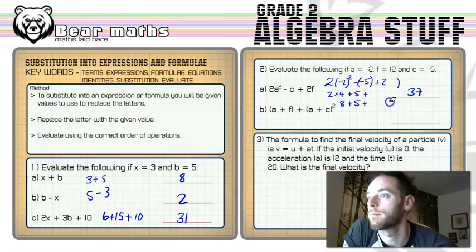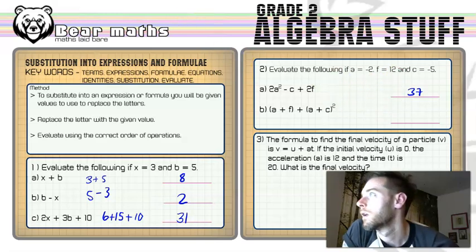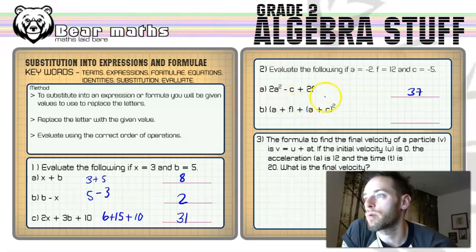And I will just get rid of that working out so I've got room to do the working out for part B. In B, we've got some brackets, and we've got some substitution again to do of these numbers. So I'm going to pop a bracket there, a big one. Then I'm going to put a little bracket and put the minus 2 in. I'm going to add the F, which is 12, in its brackets, and then close that big bracket there.